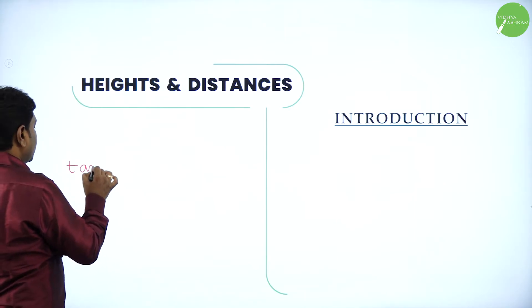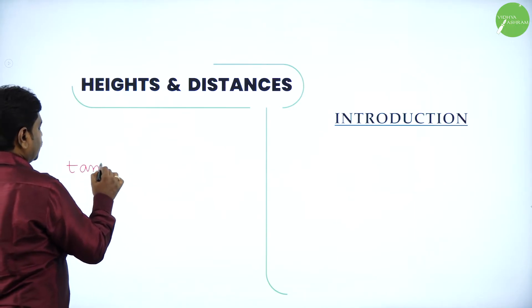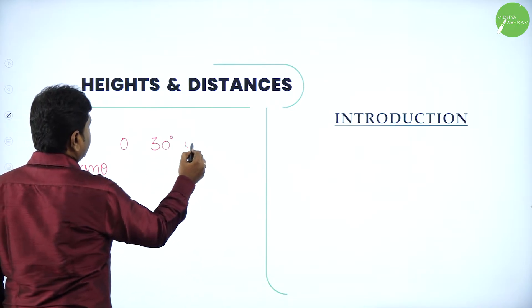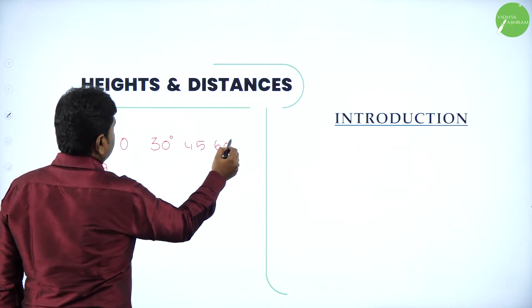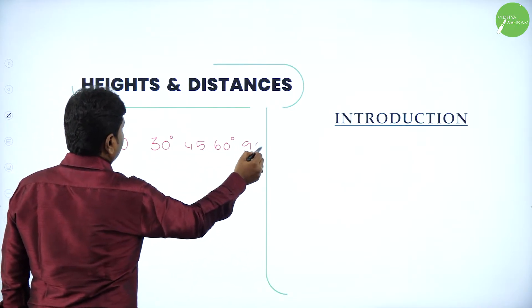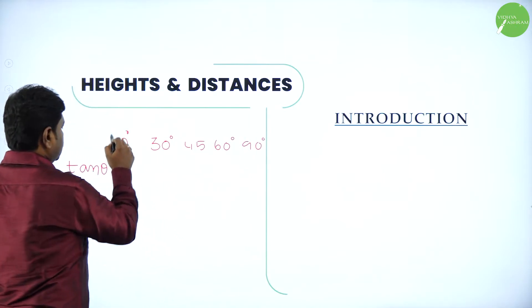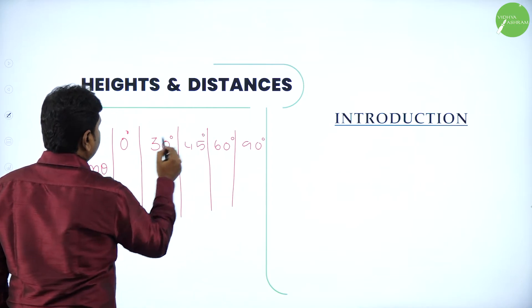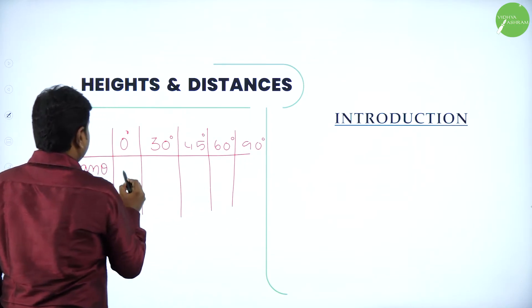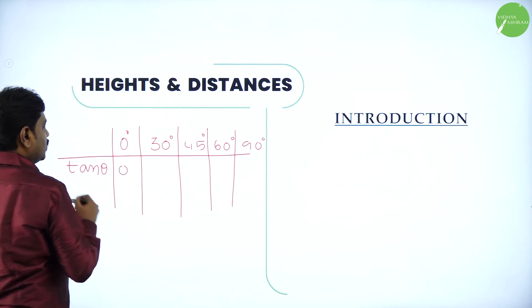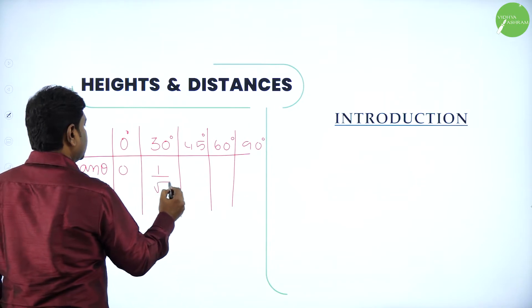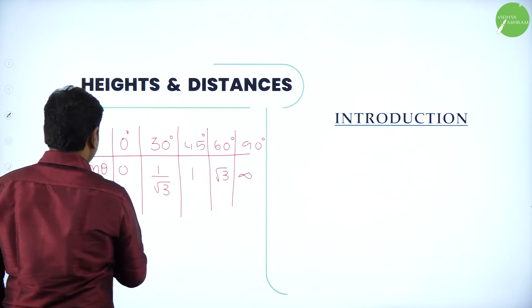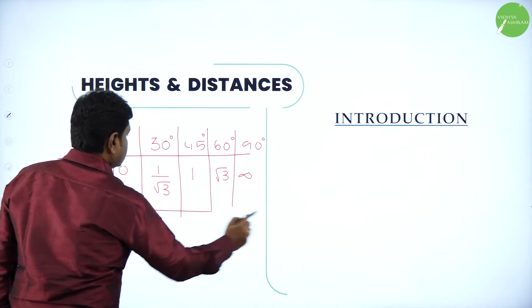Basically you should be thorough with the angle table for tan theta: 0 degrees, 30 degrees, 45 degrees, 60 degrees, 90 degrees — not only tan, but also sine and cosine. I want you to become thorough with the angle values of tan: tan 0 is 0, tan 30 is 1 by root 3, tan 45 is 1, tan 60 is root 3, and tan 90 is not defined.